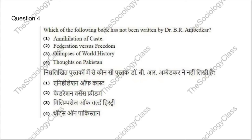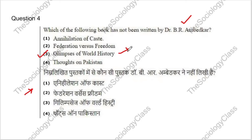Question 4: Which of the following book has NOT been written by Dr. B.R. Ambedkar? Options: Annihilation of Caste, Federation versus Freedom, Glimpses of World History, or Thoughts on Pakistan. The correct answer is option 3 — Glimpses of World History, which was written by Jawaharlal Nehru.